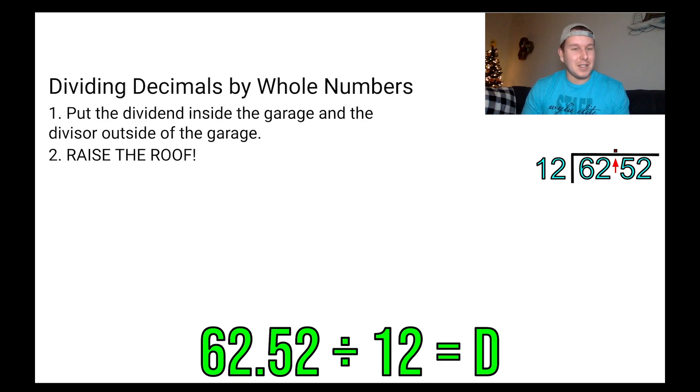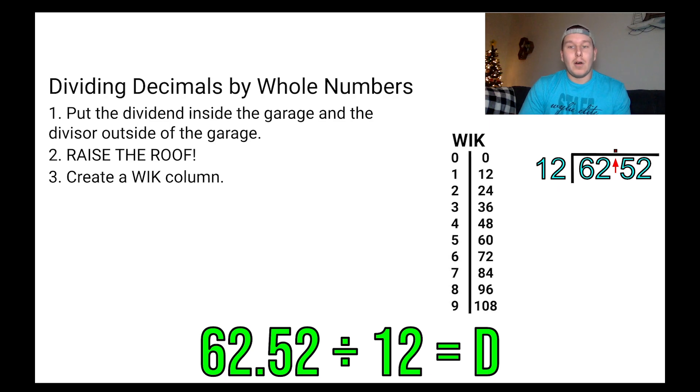Don't worry. He's going to be safe. He never gets hurt when he's up on that roof. Then step three is going to be create a width column. So width columns are making a comeback. So we're going to use that divisor and multiply all the way up through nine. This does take a little bit of time, but this is really going to help us while we're dividing.